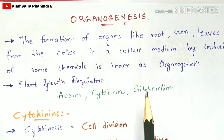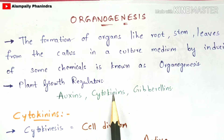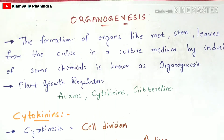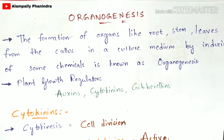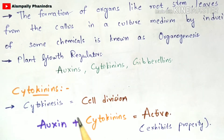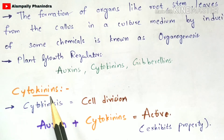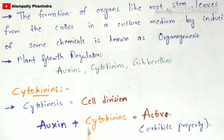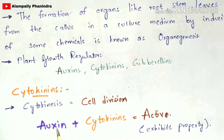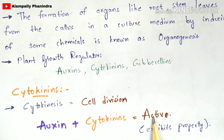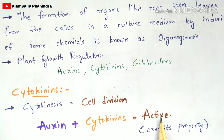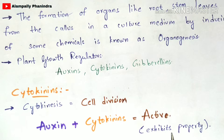Auxins and cytokinins play a major role in organogenesis. Normally, cytokinins are in an inactive form. To make them active, they must react with another plant growth regulator like auxin. Once cytokinins react with auxin, they get converted from inactive form to active form. In their active form, cytokinins can exhibit their function — the main function being to promote the cytokinesis process, which means cell division.